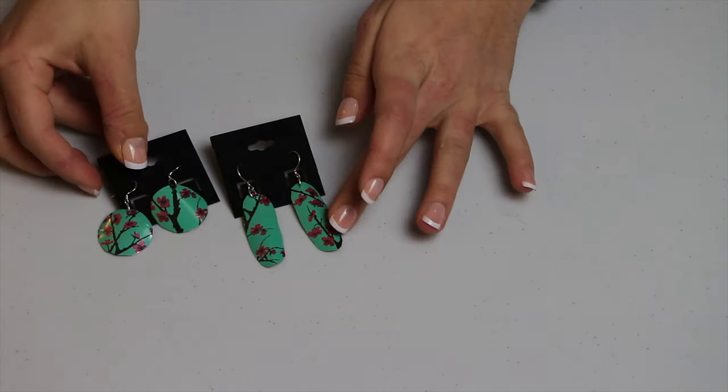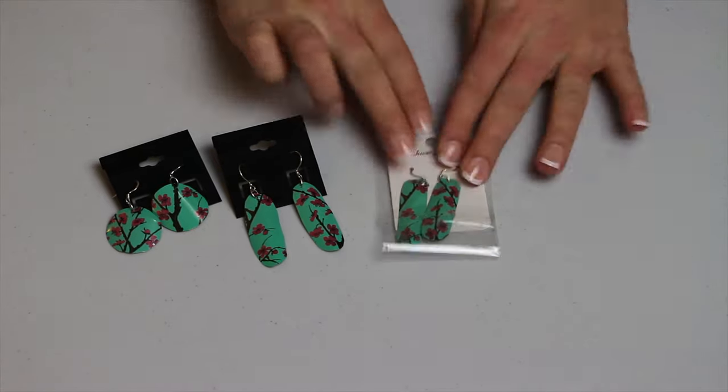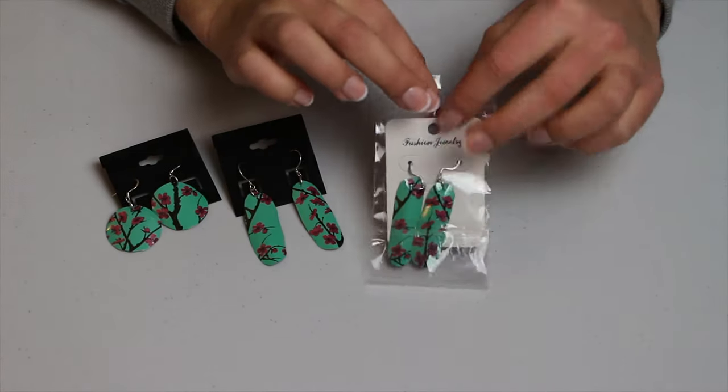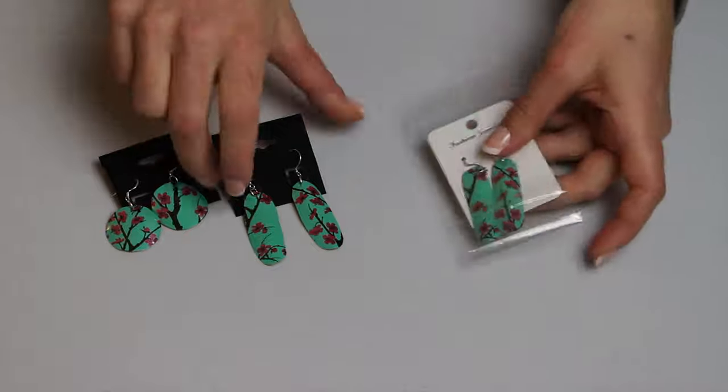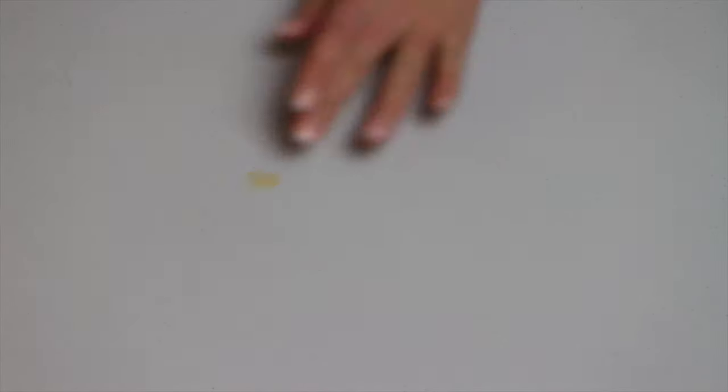So we're gonna be making earrings like I said out of old pop cans. I use the Arizona tea can and I got some of these holders from Michaels. The one in plastic is just a leftover one that I had saved, always worth reusing.